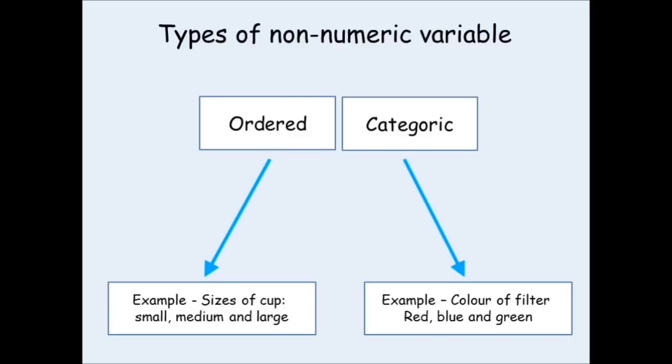Categoric variables, on the other hand, are again words rather than numbers. But, they don't go into any sort of order. For instance, colours, red, blue and green. They do not go into any sort of order. Further examples could be the colours of cars that the parents of your classmates drive. They're words rather than numbers, and they can't be put into any specific order.